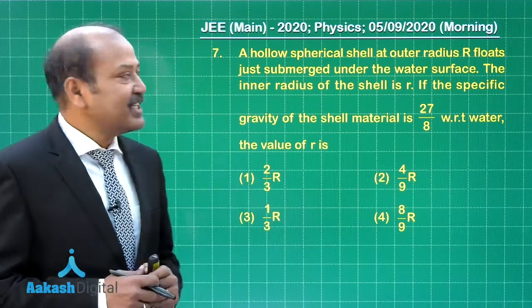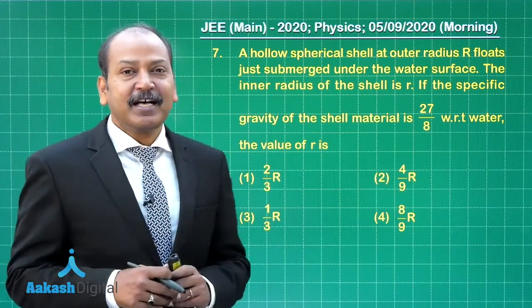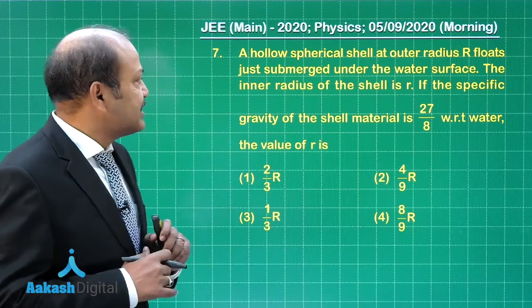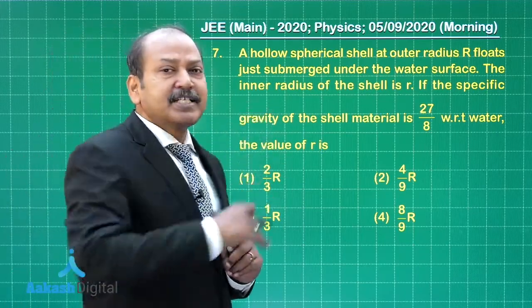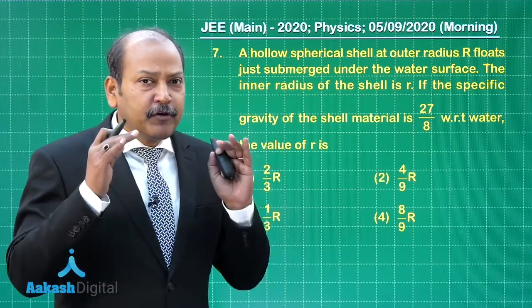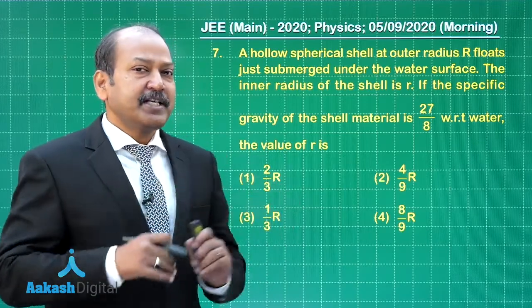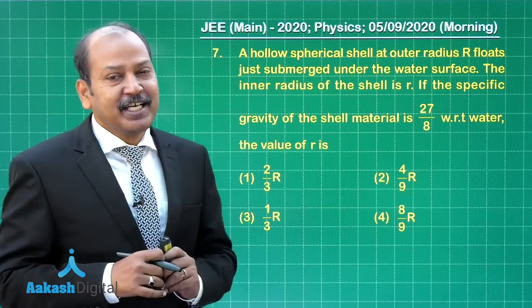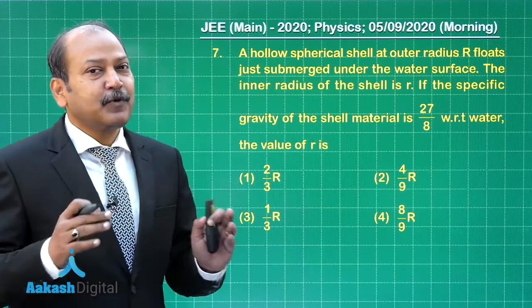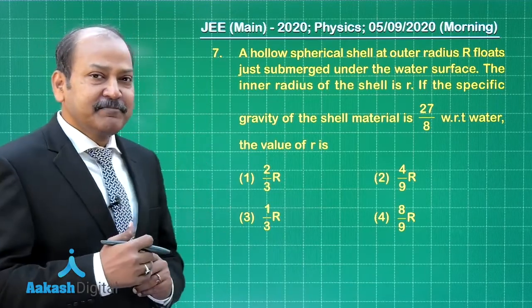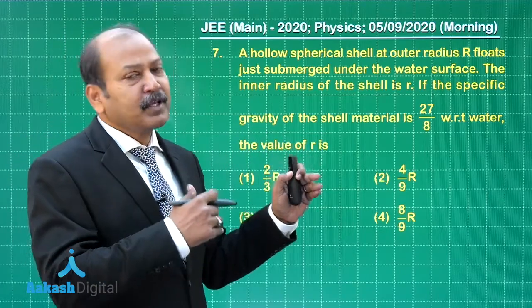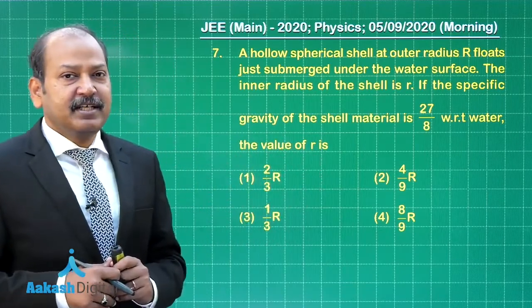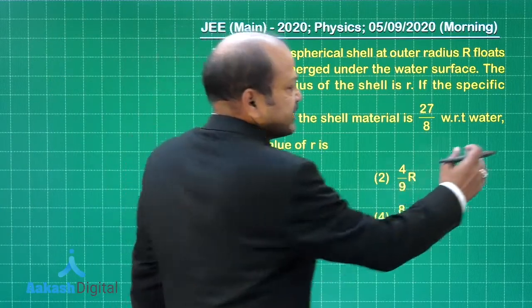Clearly the question is based on Archimedes principle and in this case the weight of the shell is equal to the weight of water displaced by it. That means the mass of the shell equals mass of the water displaced by it. So let us equate the mass of shell with mass of water displaced and that will give us the answer.